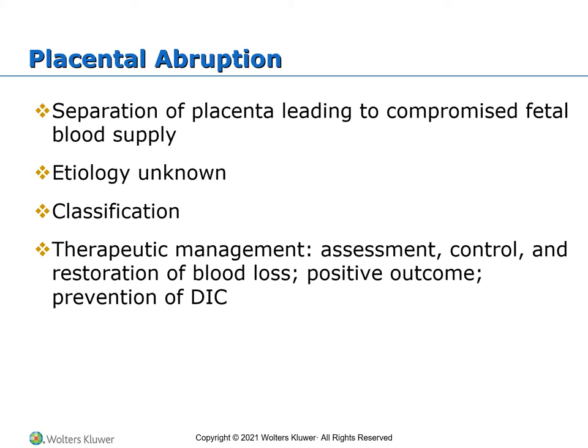Placental abruption is the detachment of part or all of a normally implanted placenta from the uterine wall after the 20th week of gestation. This leads to bleeding and hematoma formation on the maternal side of the placenta — as the clot expands, further separation occurs, interfering with placental-fetal circulation. Classifications: Grade 1 is mild — minimal bleeding less than 500 milliliters, only 10 to 20% separation, maybe a tender uterus, no signs of shock, no fetal distress, minimal dark red vaginal bleeding, and normal uterine tone.